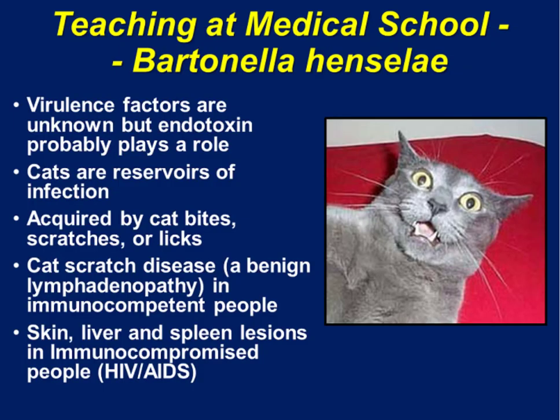In a typical medical school course, Bartonella henselae is taught in the following way: that cats are reservoirs of infection, it is always acquired by cat bites, scratches, or licks, there are virulence factors but they are predominantly unknown, cat scratch disease is a benign lymphadenopathy in immunocompetent people, and that skin, liver, and spleen lesions can be seen in immunocompromised people, such as those with HIV-AIDS.